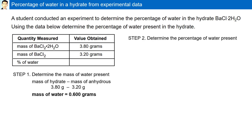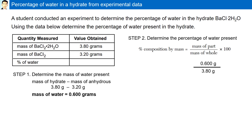Step two is to determine the percentage of water present using our formula. The mass of the part — the amount of water present — was 0.600 grams. The mass of the whole sample was 3.80 grams, multiplied by 100. A common misconception is to use 3.20 grams instead of 3.80 grams for the mass of the whole. Our final answer is 15.8%. The percentage of water present in the hydrate BaCl2·2H2O was found to be 15.8%.